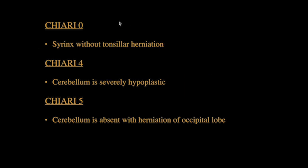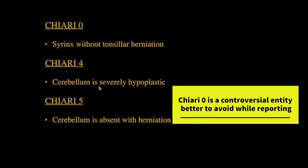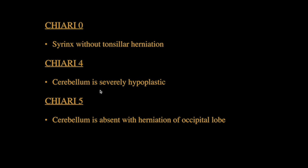The other rare variants of Chiari malformation are: Chiari 0, where there is syringohydromelia without tonsillar herniation; Chiari 4, where the cerebellum is severely hypoplastic without herniation through the foramen magnum; and Chiari 5, where the cerebellum is absent and there is herniation of the occipital lobe through the foramen magnum.